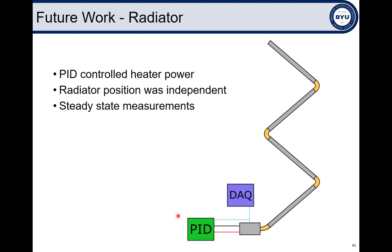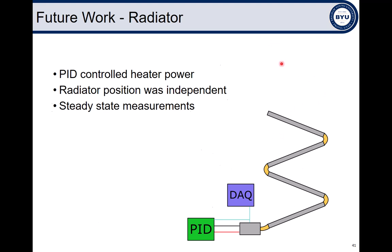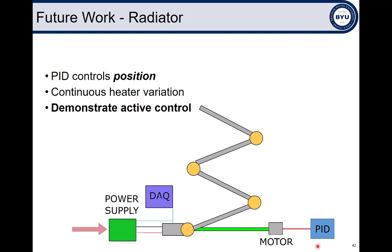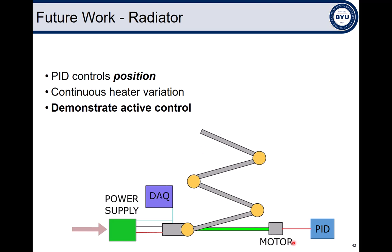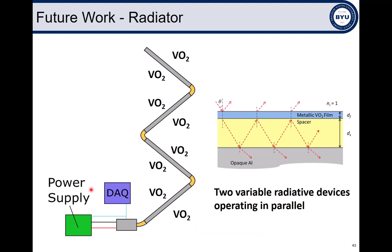Likewise, my previous vacuum demonstration used a PID controlled heater where the radiator position was the independent variable. As a result, we could only demonstrate steady state control and we weren't exactly matched to how this would be used in reality. What I want to do moving forward is demonstrate real-time active control by now using a PID controller to manipulate the position of the radiator in real-time as opposed to the heater power. And the heater power now will independently rise and fall. This demonstration will duplicate exactly the usage of this device in application.